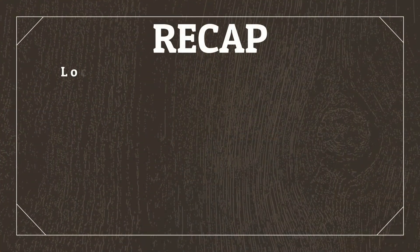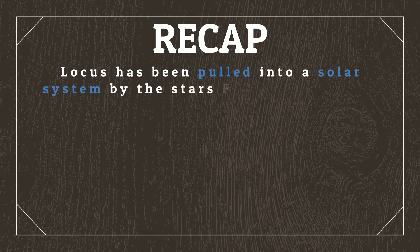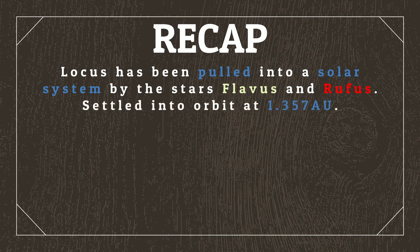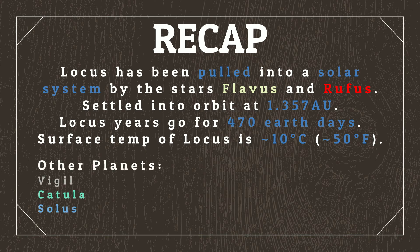So, to recap: Locusts has been pulled into a solar system by the binary stars Flavus and Rufus. It has settled into a stable orbit with a year slightly longer than that of Earth, and a temperature slightly colder than Earth, but only by 4 degrees Celsius. We've created the gas giant Vigil, as well as two other icy planets called Catula and Solus. And finally, we've ensured that Locusts has a major moon called Ceruleus, and thrown in a minor moon called Malus for flavor.